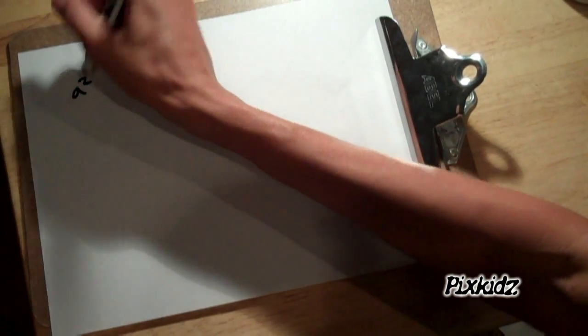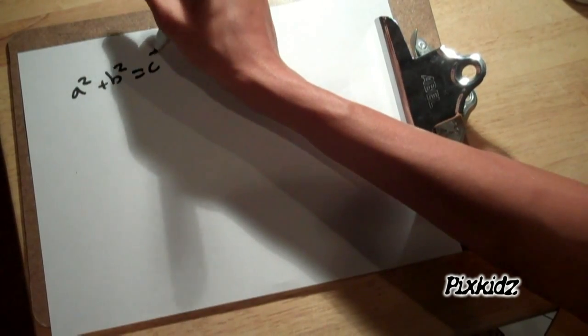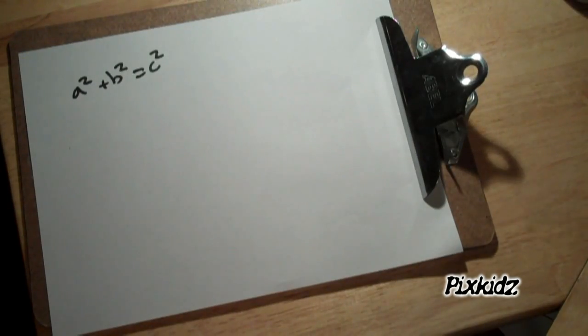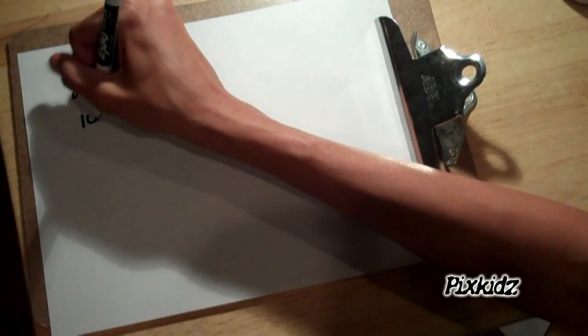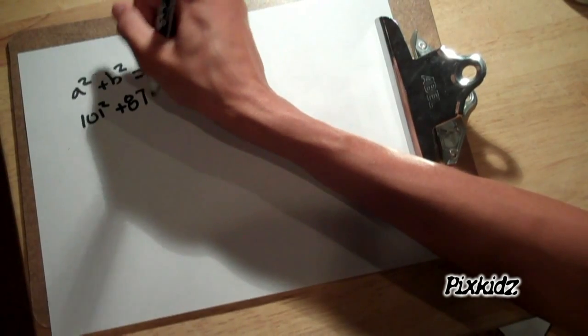The Pythagorean theorem is a squared plus b squared equals c squared. Now the a squared and the b squared are the legs of the triangle. So we can insert into the equation now, 101 squared plus 87.5 squared.